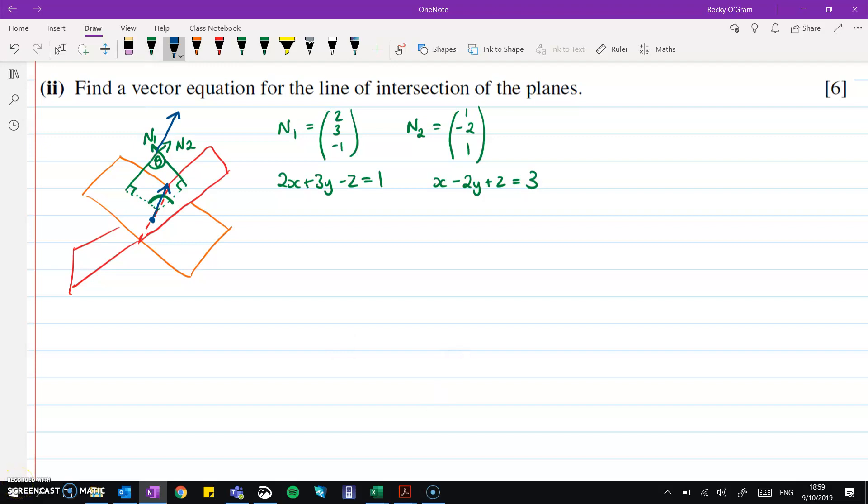So to do that, we're going to take our two normals and work out the vector product on them. We get 1, minus 3, minus 7. That is the direction vector of the line that we're looking for, the line of intersection.